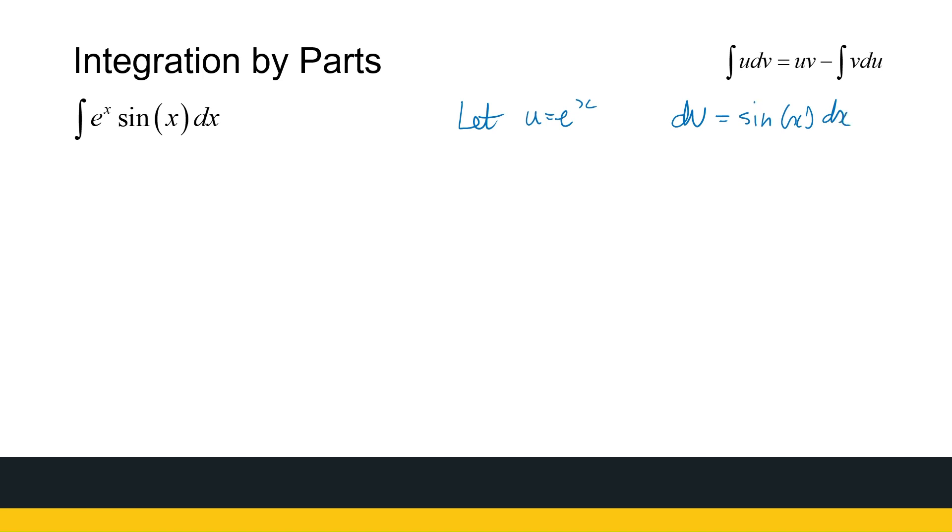Now, this is another special case. And you'll see shortly why. du is then e to the power x dx, and v is minus cos x dx. So this integral becomes u times v. So minus e to the power x cos x minus the integral of v du. So it's minus cos x times e to the power x dx. Let me just tidy that up. That's minus e to the power x cos x plus the integral. I'm going to write e to the power x in the front. It doesn't make a difference. It's just for convenience sake.